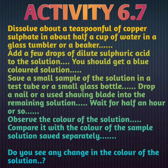Let's see another activity based on chemical change. Dissolve about a teaspoon full of copper sulfate in about half a cup of water in a beaker. Add a few drops of dilute sulfuric acid to the solution — you should get a blue colored solution. Save a small sample of the solution in a test tube. Drop a nail or a used shaving blade into the remaining solution and wait for half an hour.